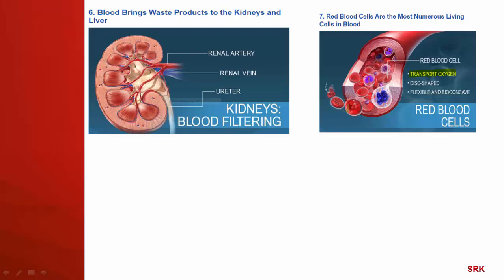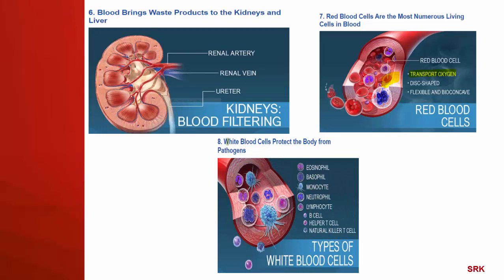The red blood cells are the most numerous blood cells and are involved in the transport of oxygen. White blood cells protect the body from pathogens — disease-causing organisms are called pathogens. WBCs protect the body from pathogens, RBCs transport oxygen and carbon dioxide, blood brings waste products to kidney and liver, and platelets help in blood clotting at the site of injury.